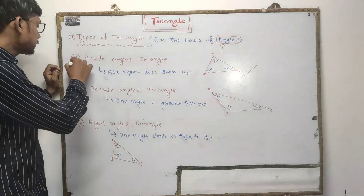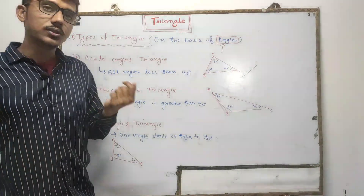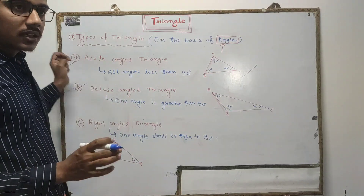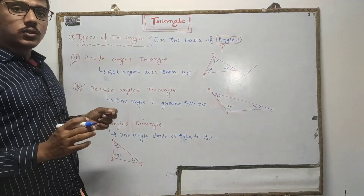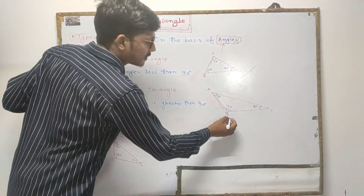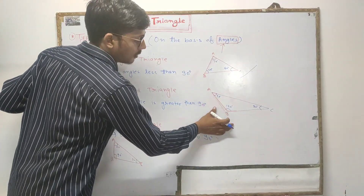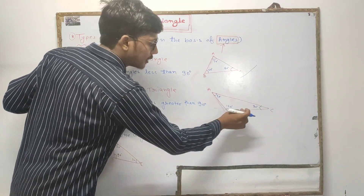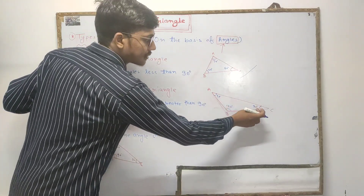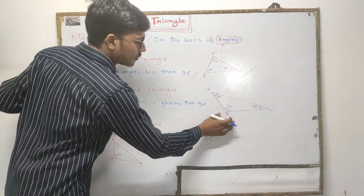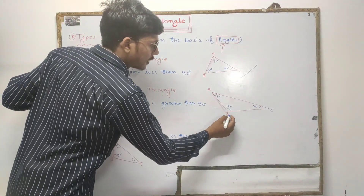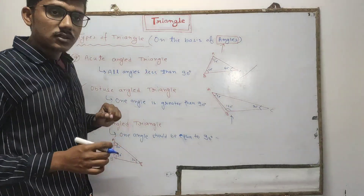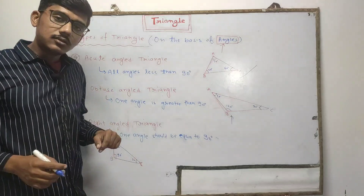The second type is an obtuse angle triangle. In an obtuse angle triangle, one angle should be greater than 90 degrees. In this figure, angle A is 30°, angle B is 120°, and angle C is 30°. Since angle B is 120° — which is greater than 90° — this triangle is known as an obtuse angle triangle.